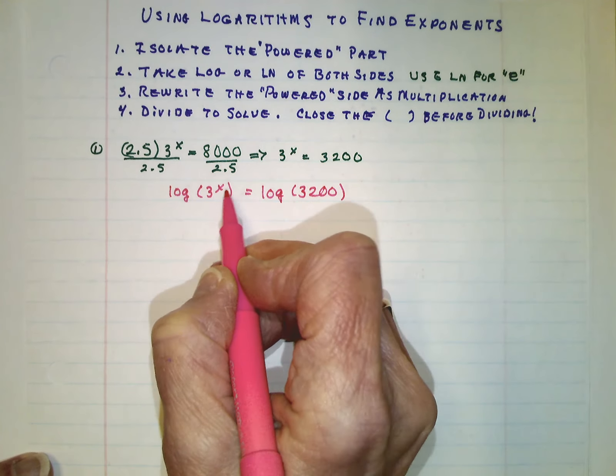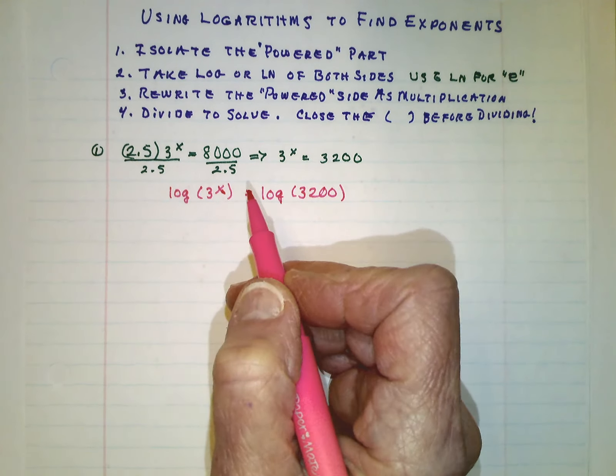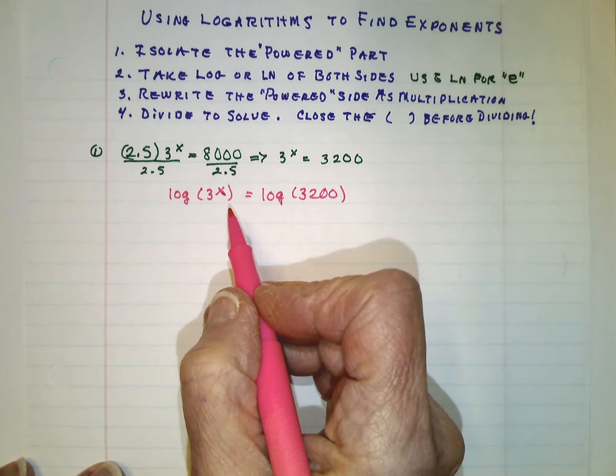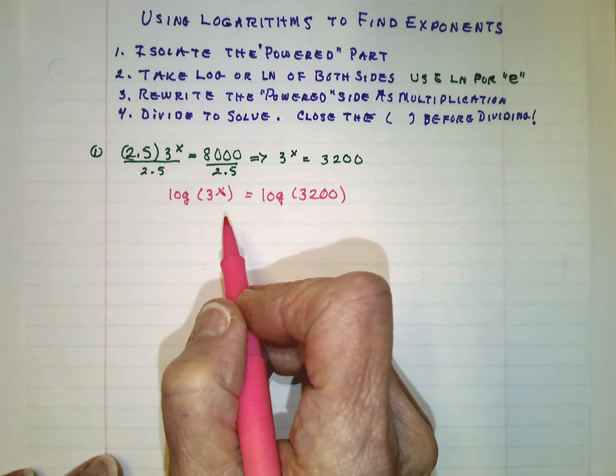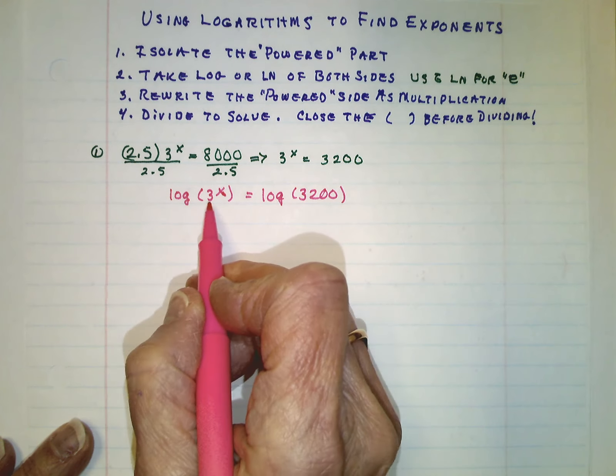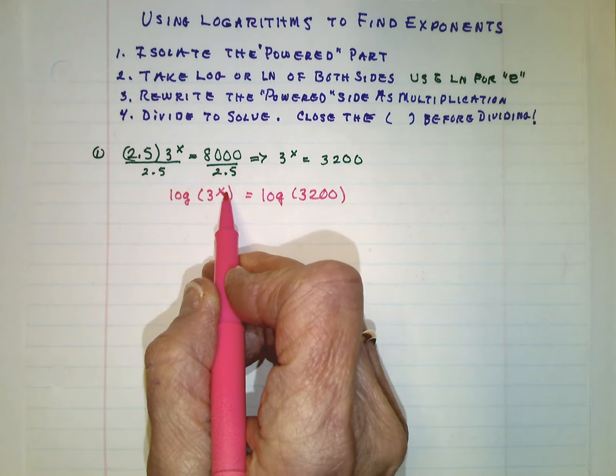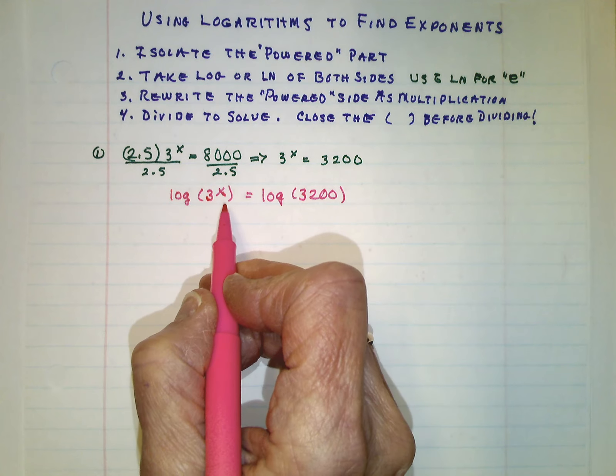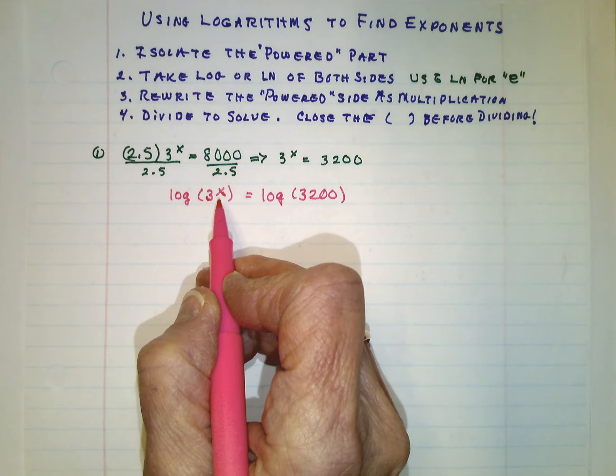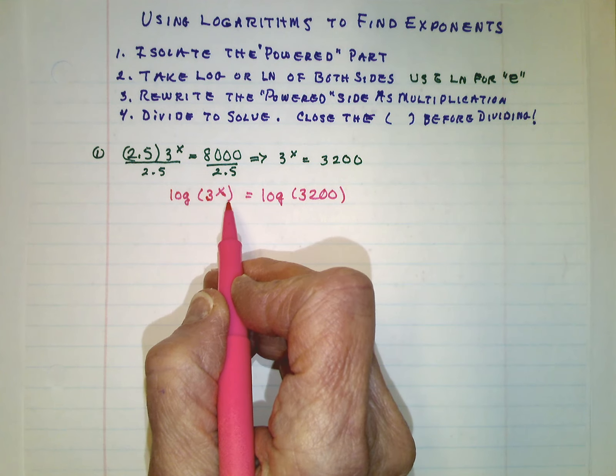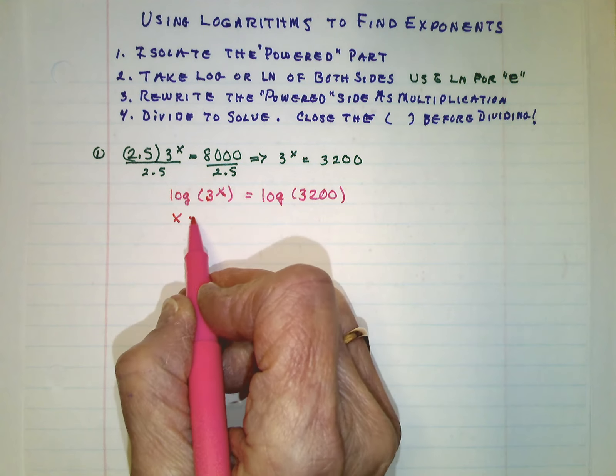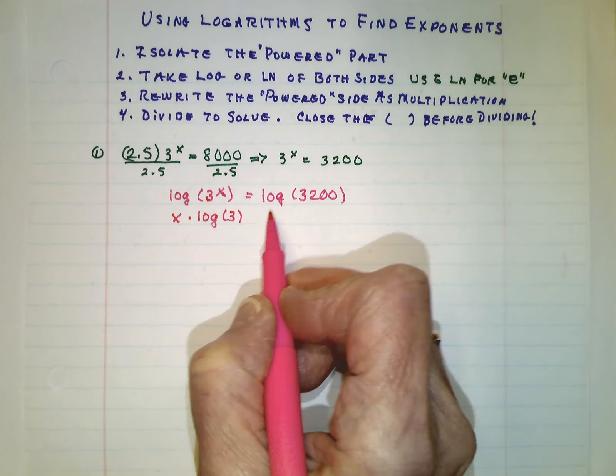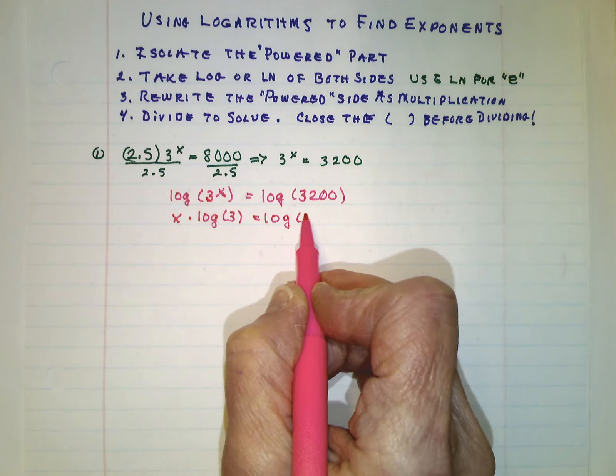You can do almost anything to both sides of the equation except multiply or divide by 0. As long as you do it to both sides, it's fair. So the calculator is going to put both of these in base 10. But before we put it in the calculator, this can be simplified. This is an exponent of something being raised to the power. And we have done this before recently. Use the laws of logarithms to change this power of a power into multiplication. I'm going to bring the x out in front and make it x times the log of 3. And this side is going to stay just log of 3,200.